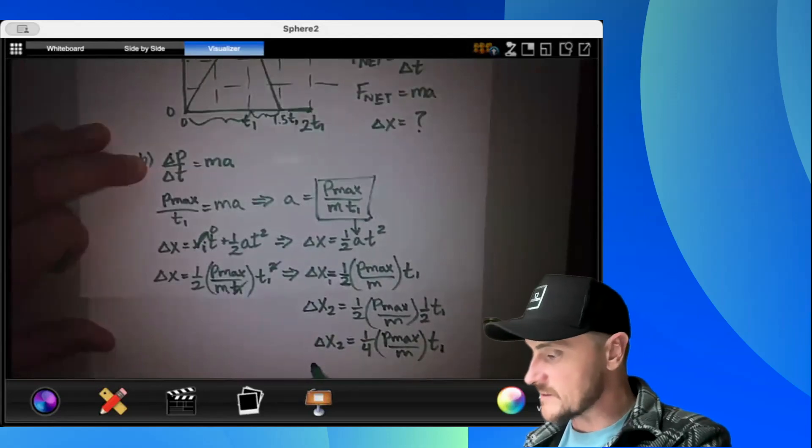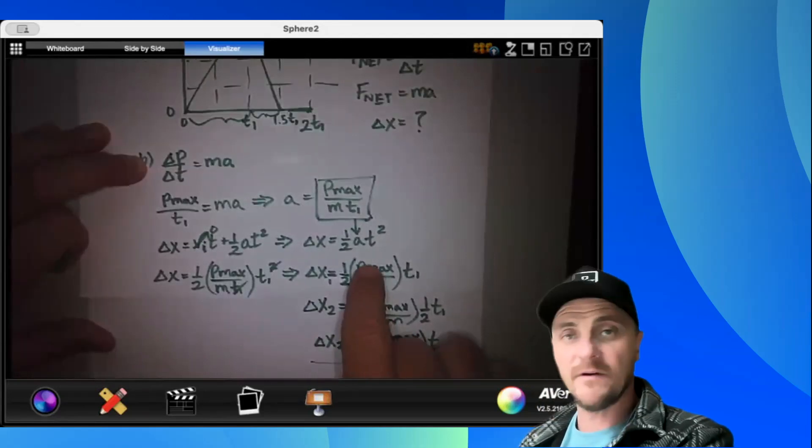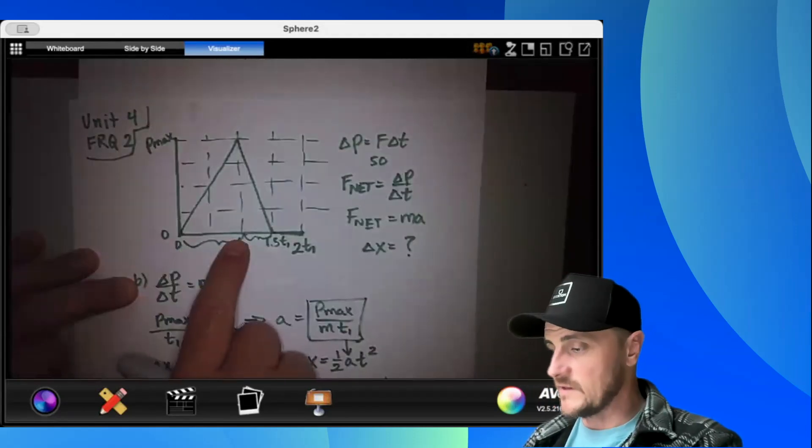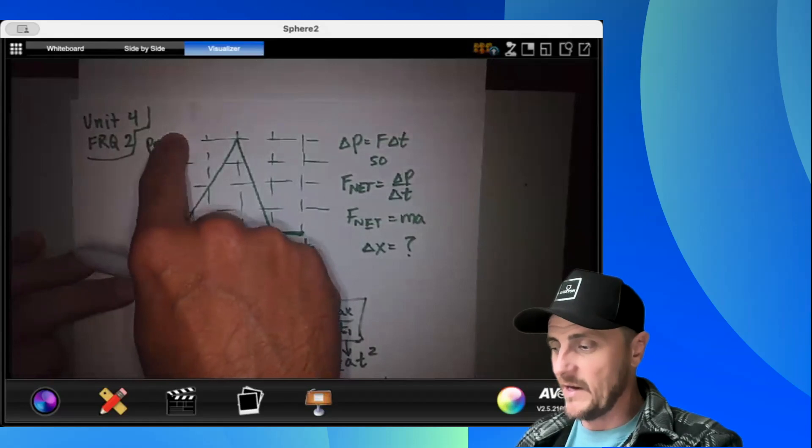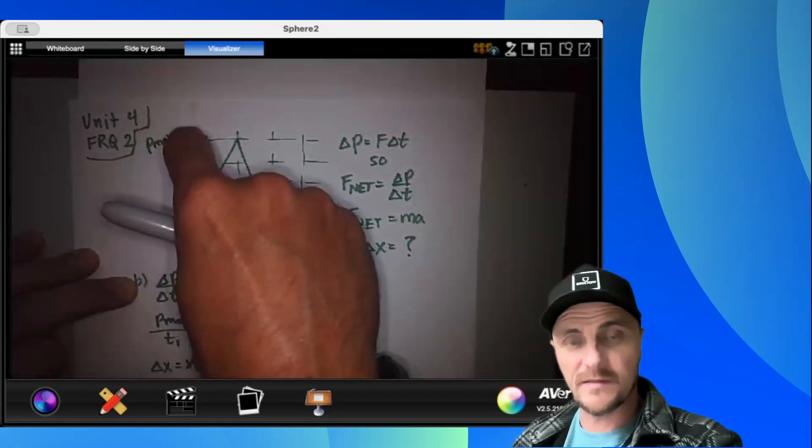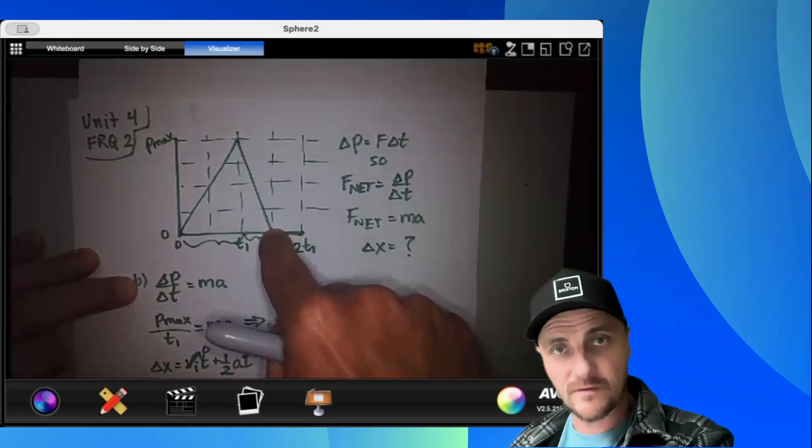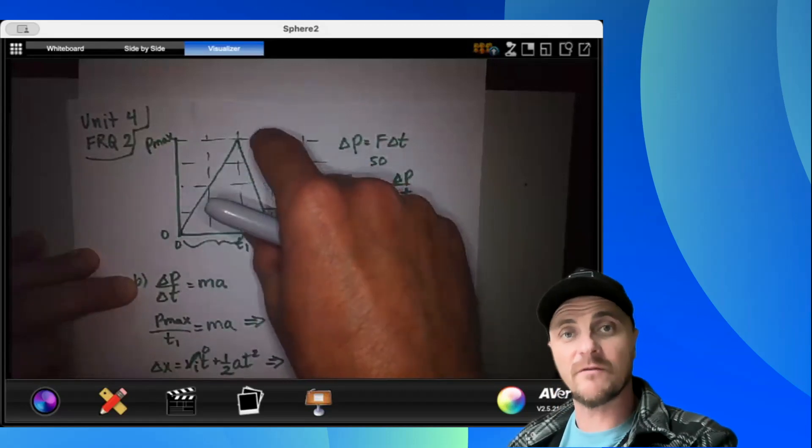And yes, this expression right here is half of that expression right there. And if you really think about it, it makes sense. Yes, during this time interval, I'm going from 0 to p max, and that's a certain interval of momentum. But in this next section, I'm going from p max to 0, and that's the same interval of momentum.